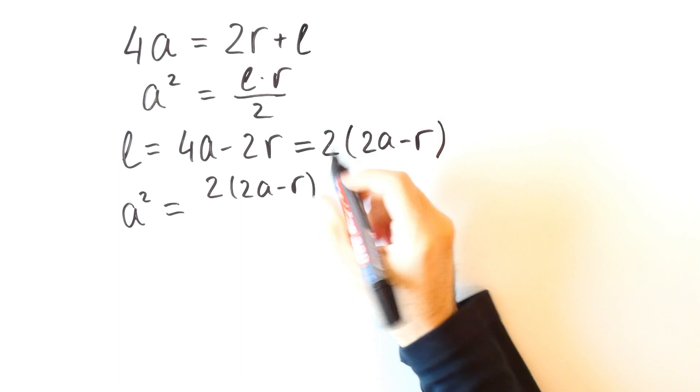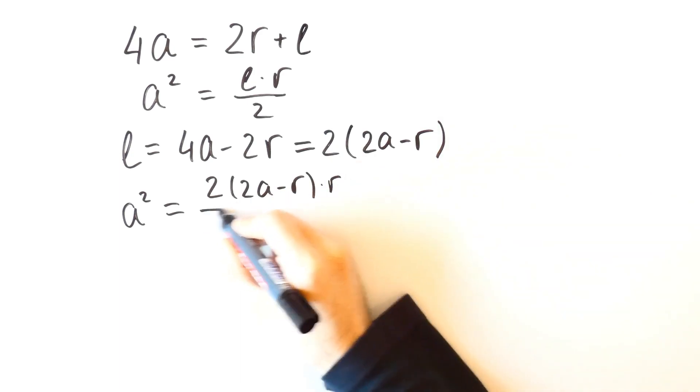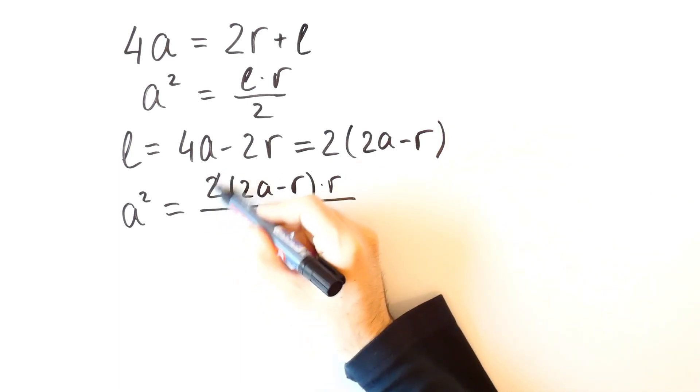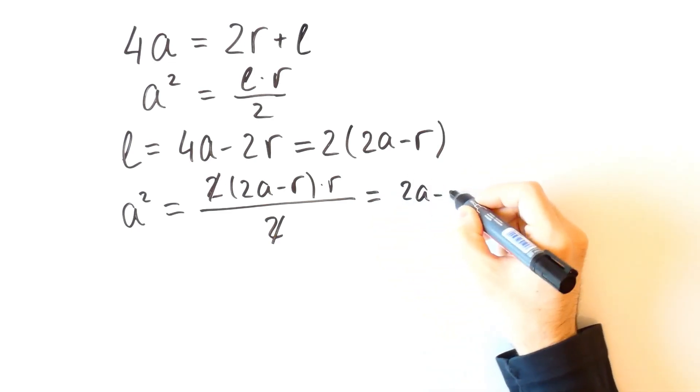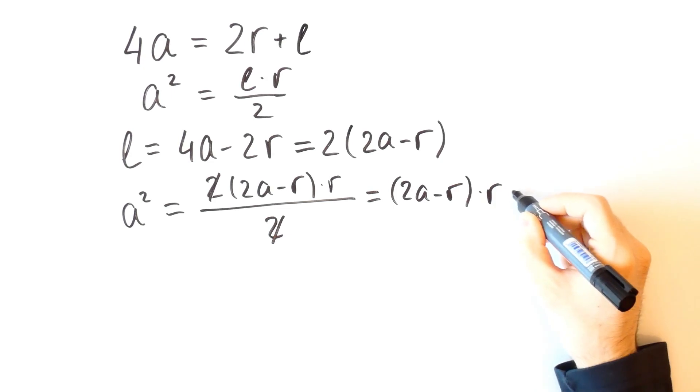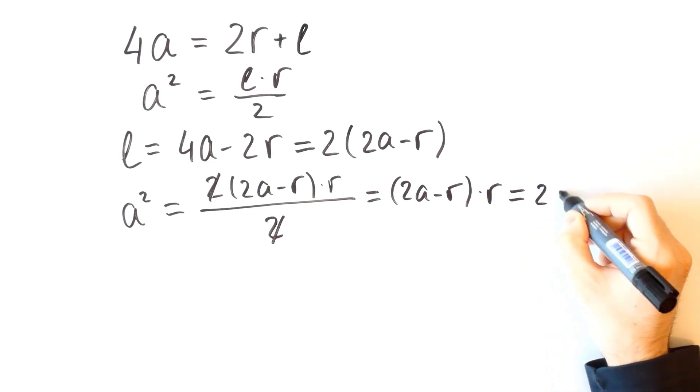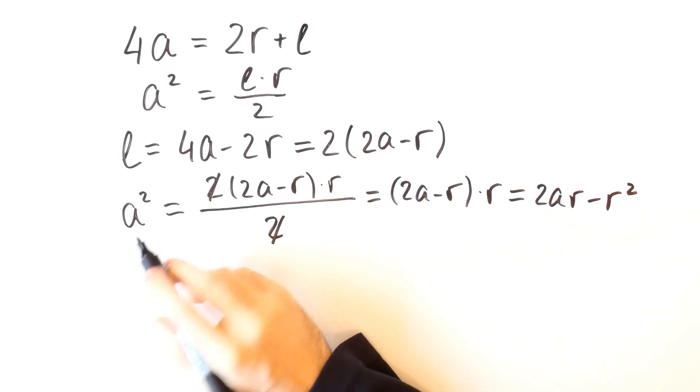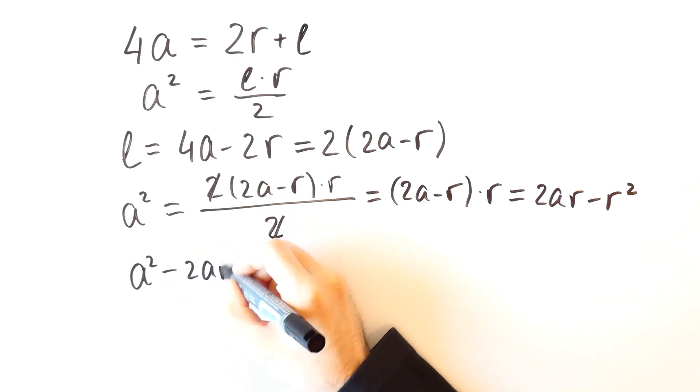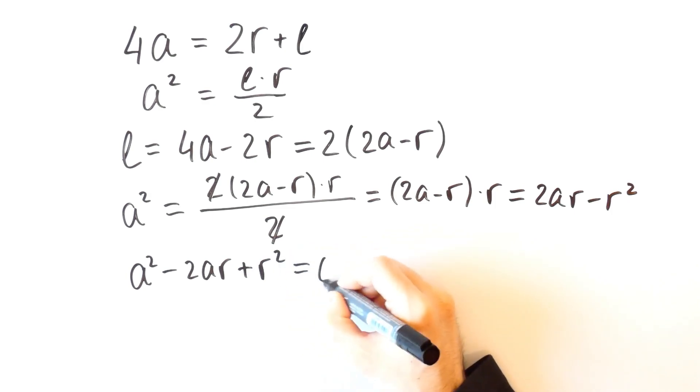Substituting into the area equation, A squared equals 2 times 2A minus R times R over 2 which is equal to 2A minus R times R and that is equal to 2AR minus R squared. And when we move this to the left side we get that A squared minus 2AR plus R squared is equal to 0.